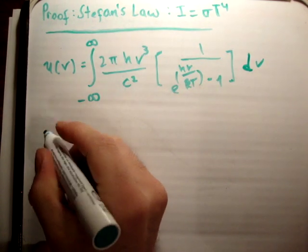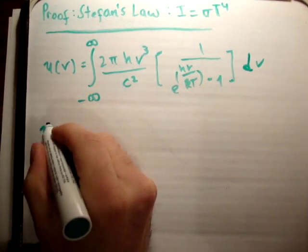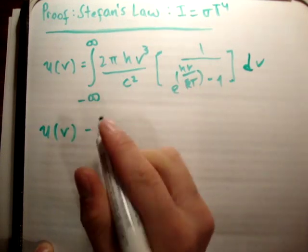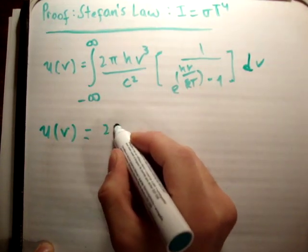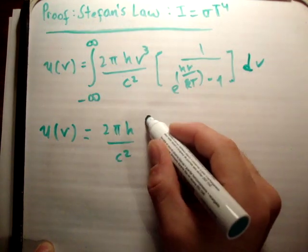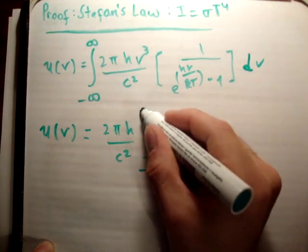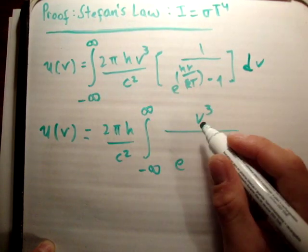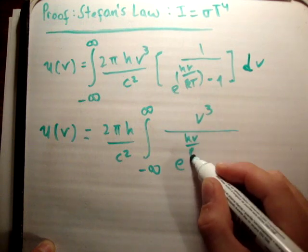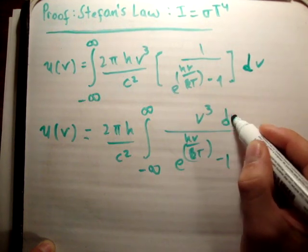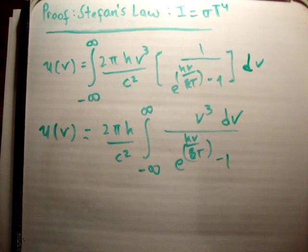Let me rearrange it. The energy density per unit frequency interval is equal to 2π times Planck's constant over c squared, outside the integral from negative infinity to positive infinity of nu cubed over the exponential function (e to the h nu over kT) minus 1, integrated d nu.